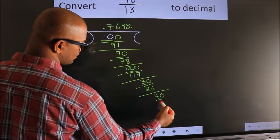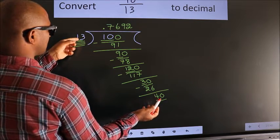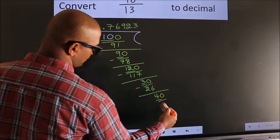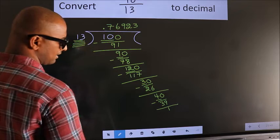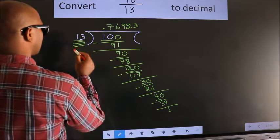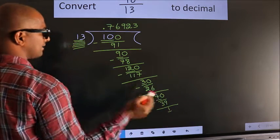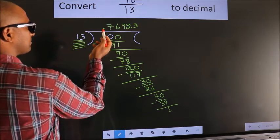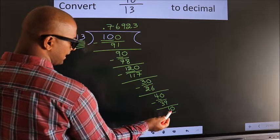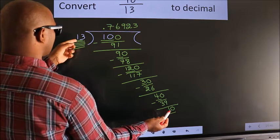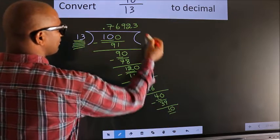A number close to 40 in the 13 times table is 13×3=39. Now we subtract and we get 1. Here we have 1, and 1 is smaller than 13. We already have the decimal so we can directly take a 0, giving us 10. But 10 is still smaller than 13, so we put a 0 here to get another 0, giving us 100.